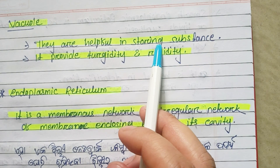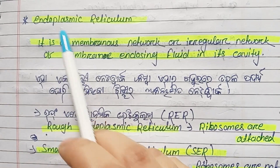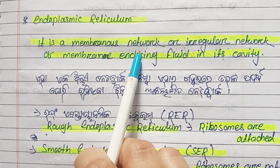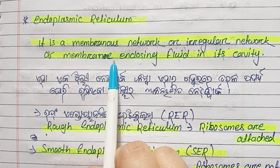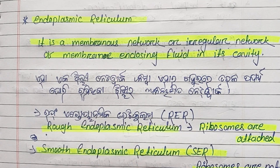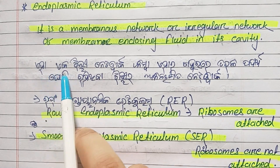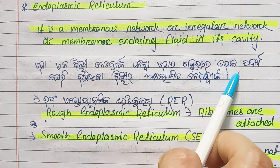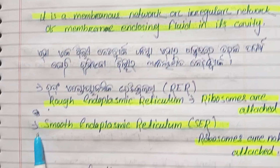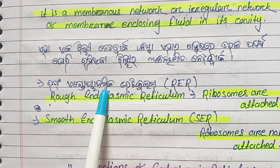Vacuoles help in storing substances. Now, endoplasmic reticulum — it is a membrane network. It is an enclosed fluid-filled cavity. There are two types: rough endoplasmic reticulum and smooth endoplasmic reticulum.